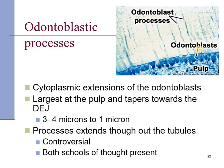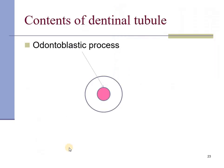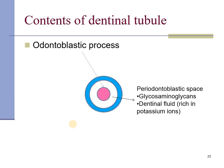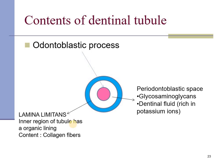The odontoblastic processes are seen as extensions within the dentinal tubules as visualized in histopathological sections. They are largest at the pulp and taper towards the dentino-enamel junction, from around 3 to 4 microns down to 1 micron. Whether these processes extend throughout the full length of the tubules is controversial. The odontoblastic process, the periodontoblastic space containing glycosaminoglycans and dentinal fluid rich in potassium ions, and a membrane called lamina limitans together constitute the components of a dentinal tubule.